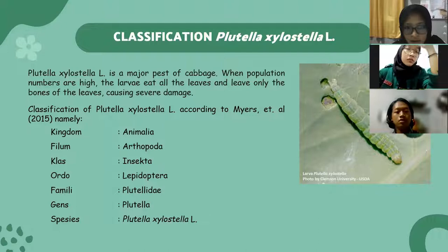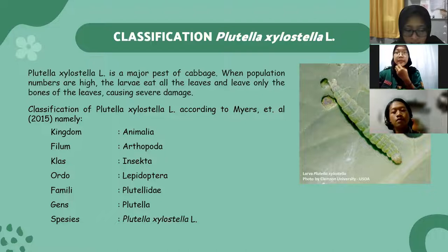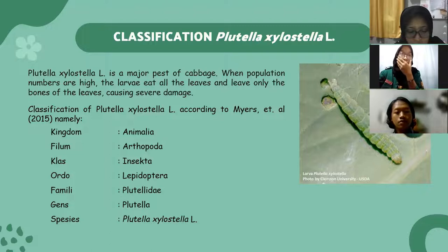The classification of Plutella xylostella according to Mires et al. 2015: kingdom Animalia, phylum Arthropoda, class Insecta, order Lepidoptera, family Plutellidae, genus Plutella, and species Plutella xylostella L. This pest causes 20% to 30% damage to cabbage plants, such that the produce can no longer be sold. This type of pest occupies a position as the main pest.